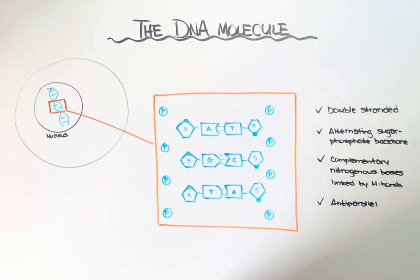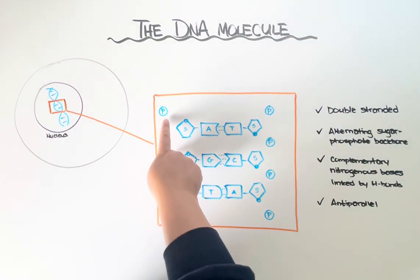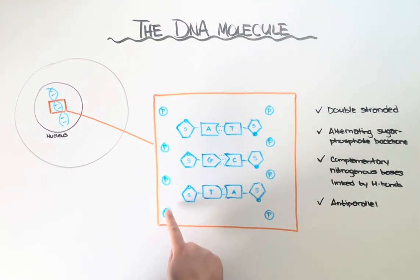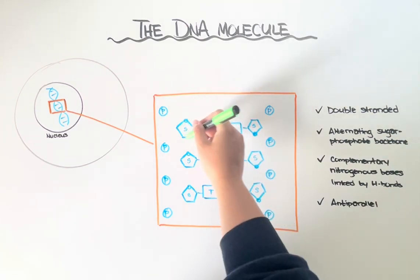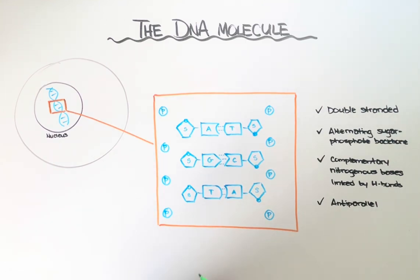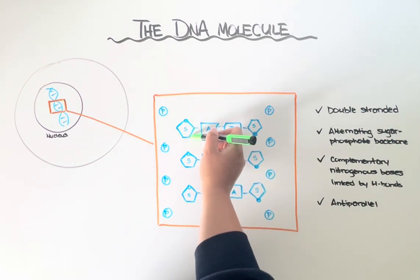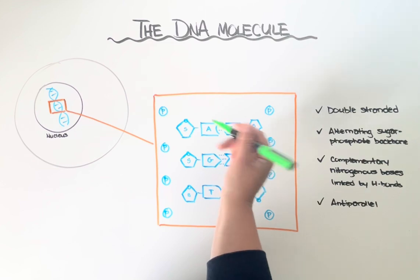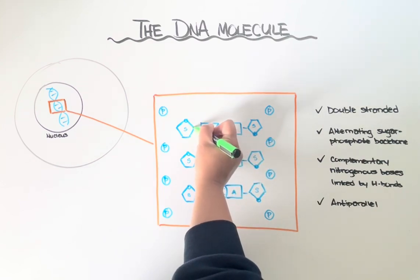We can actually go ahead and label the directionality of each of these strands depending on which carbon the phosphate molecules bind to. In order to label the carbons, I'm going to have to maybe remind you of some organic chemistry. In this pentose sugar, the tip is actually an oxygen molecule, whereas any other place where two lines intersect is assumed to be a carbon.